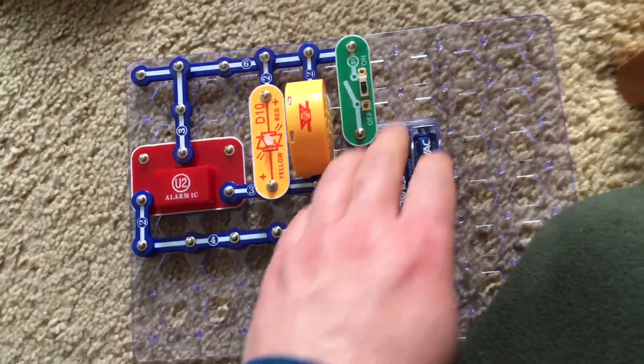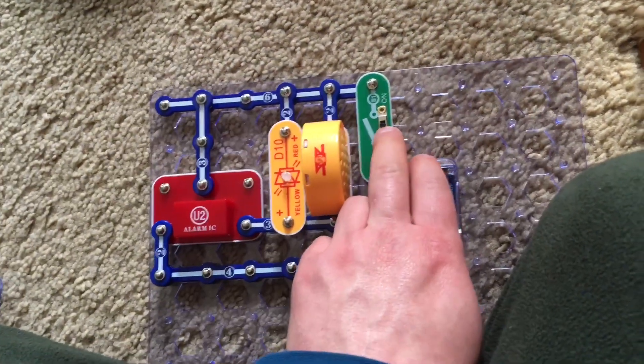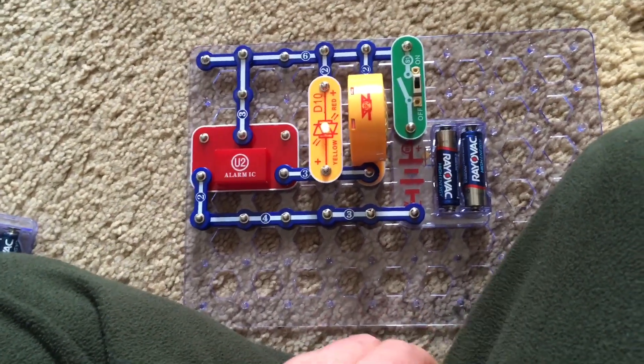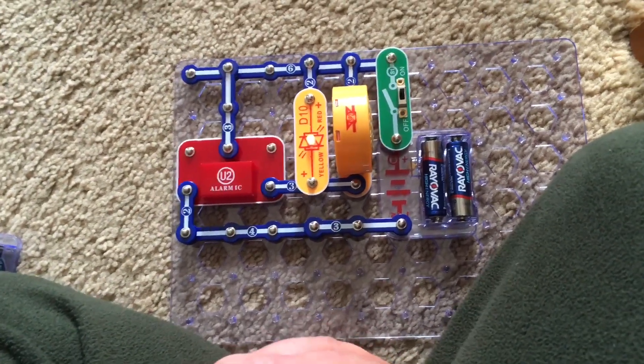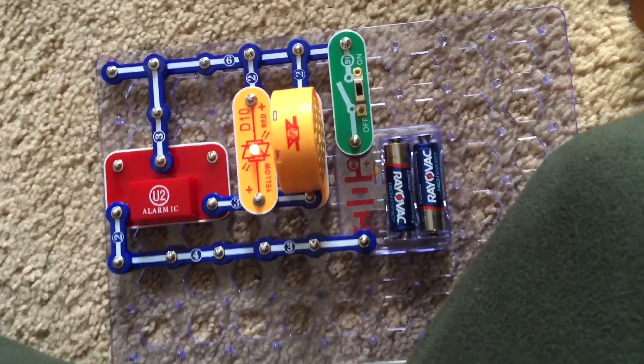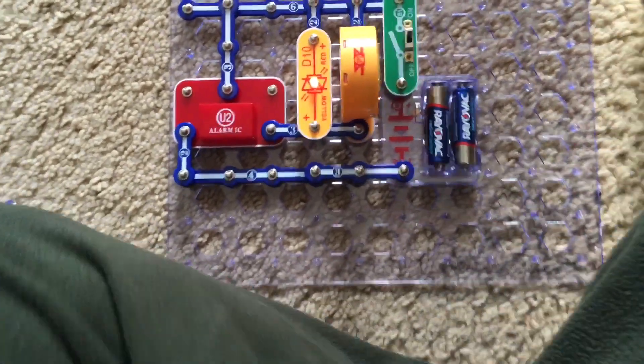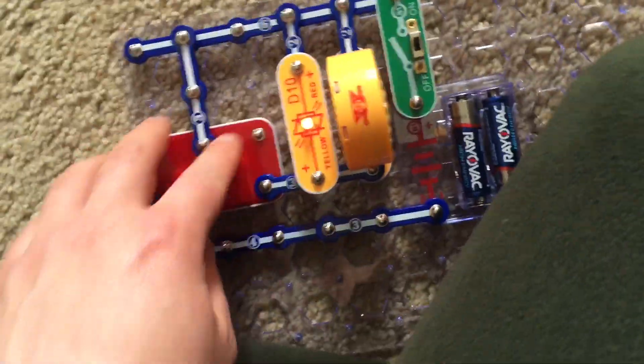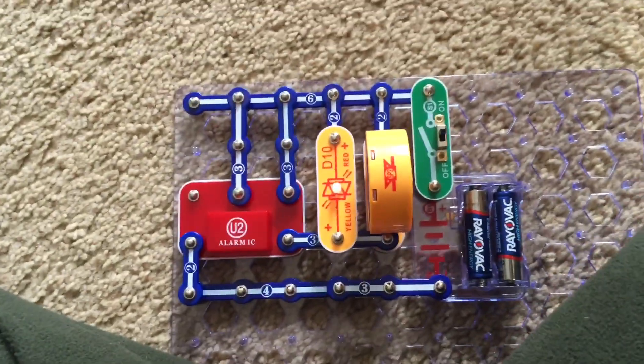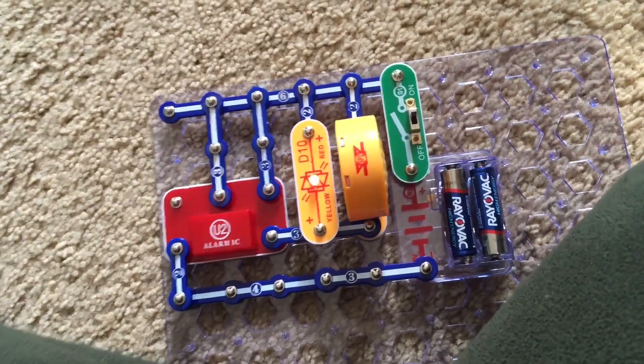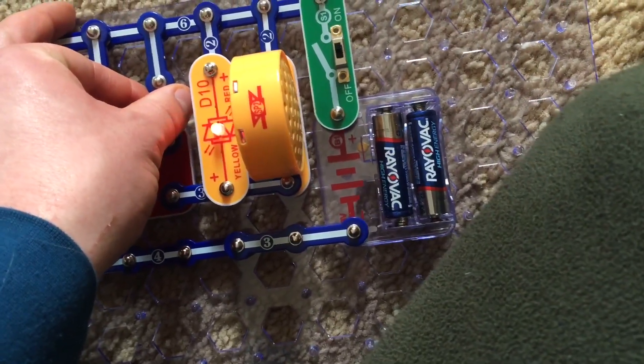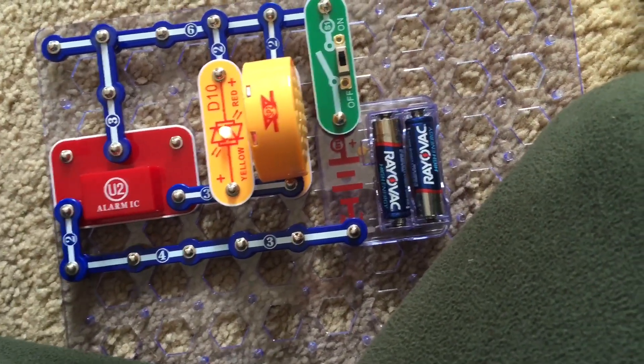When I turn on the slide switch an alarm sounds and a light comes on. Right now the siren sounds like a police car siren but when I add a connection to points D and E the alarm now sounds like a machine gun.